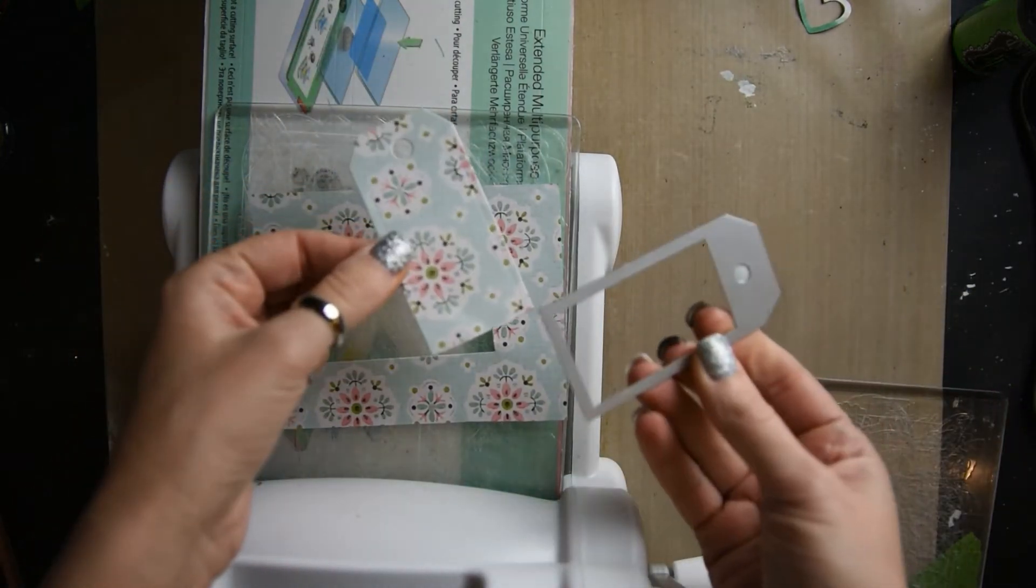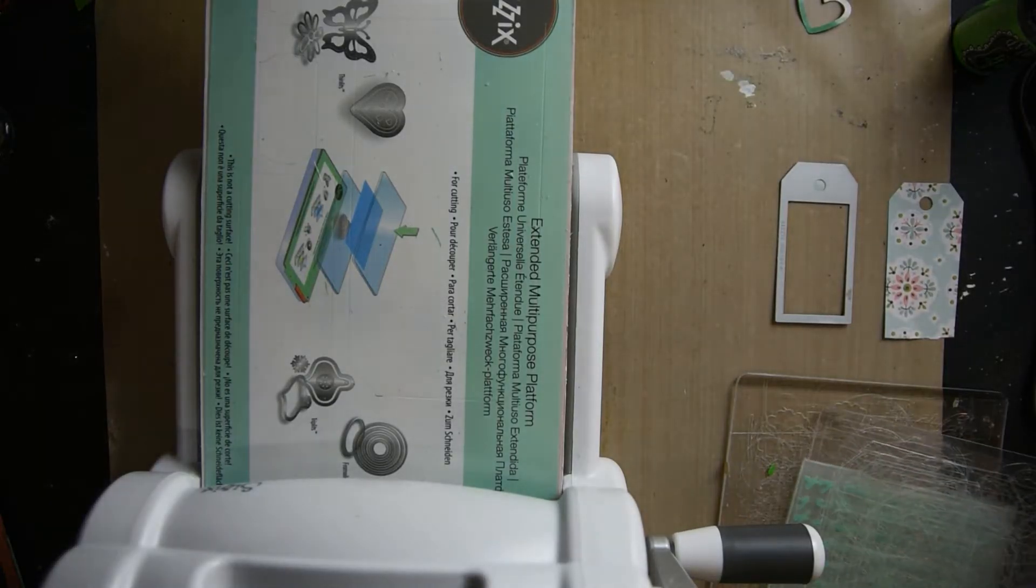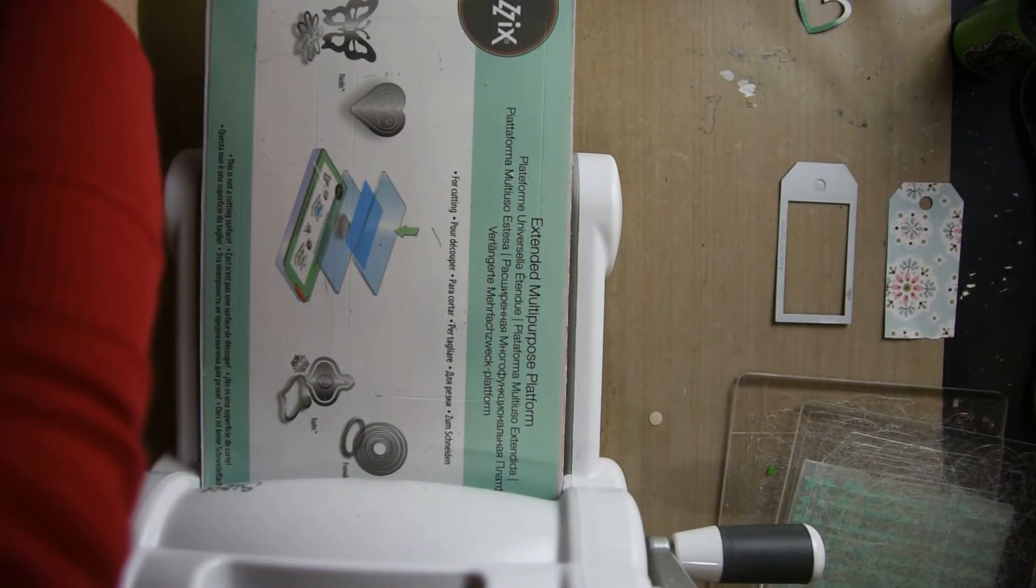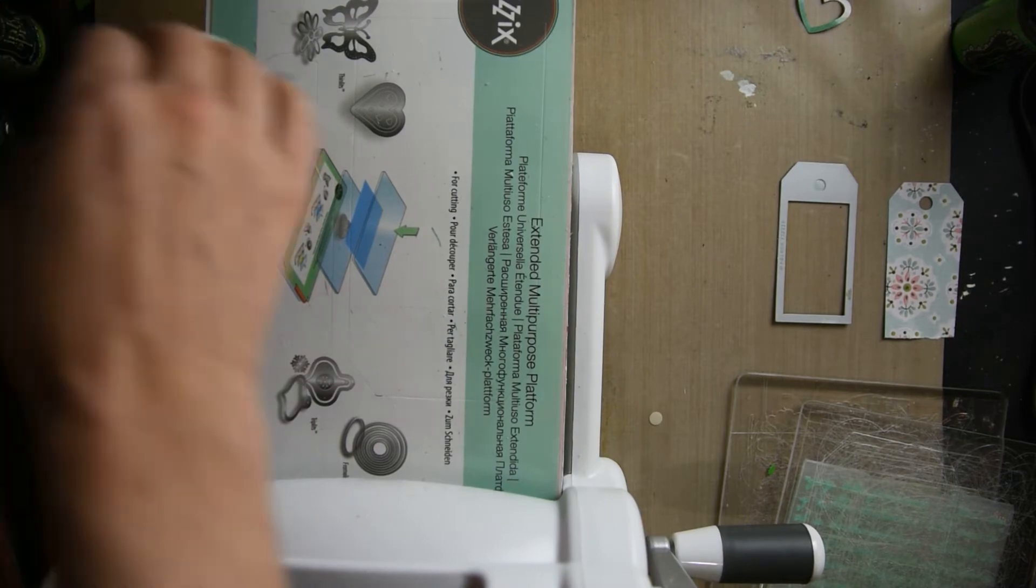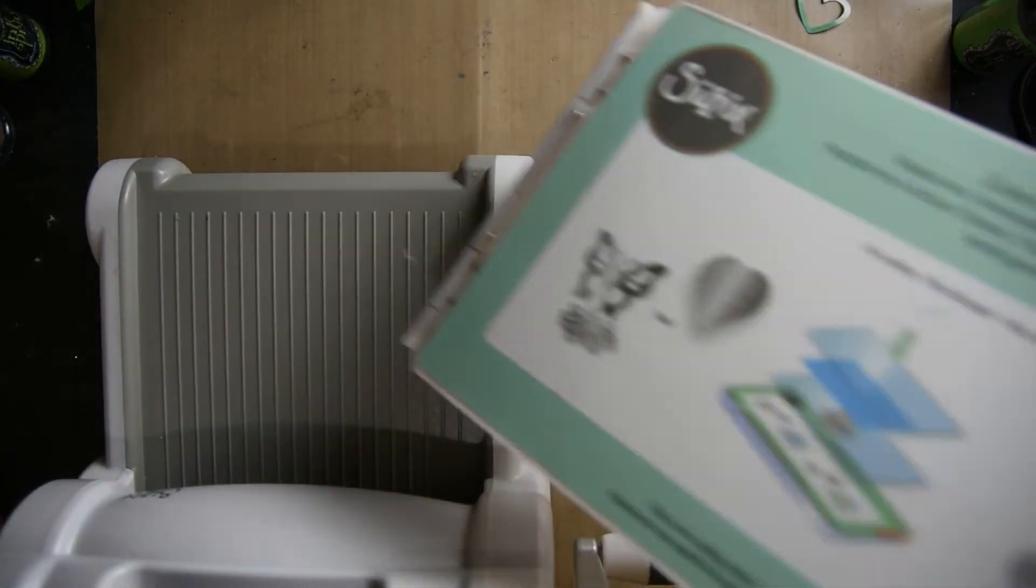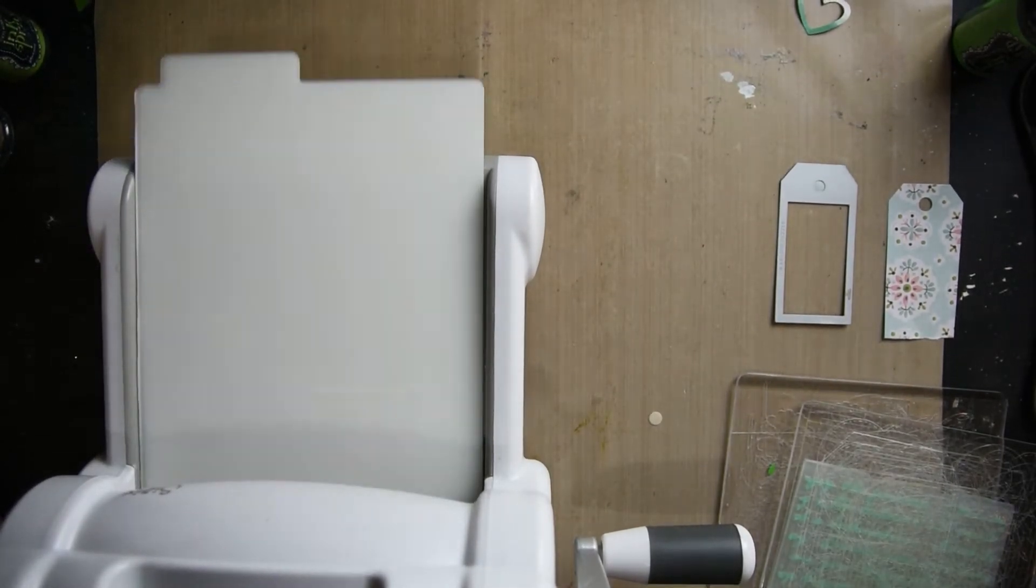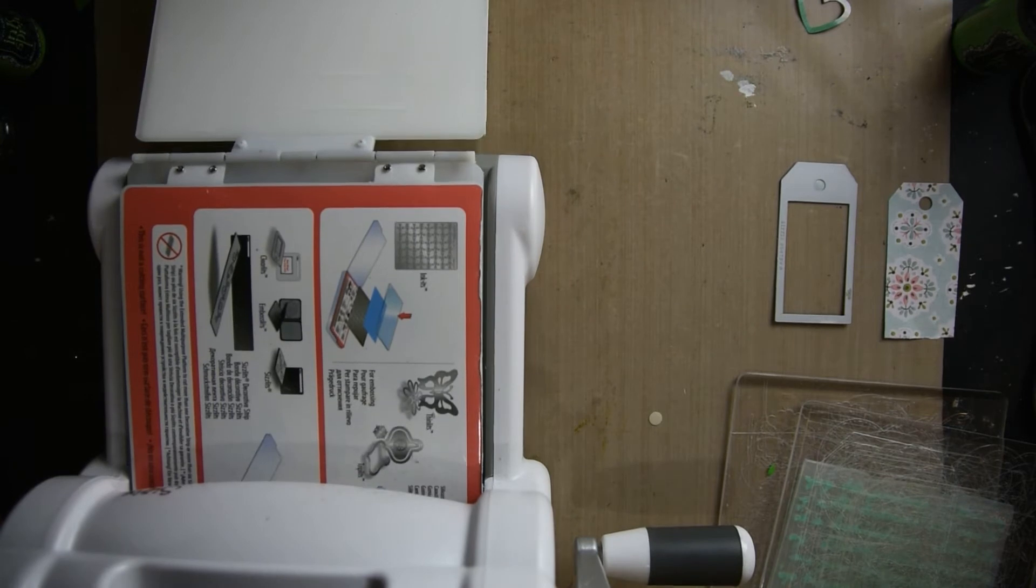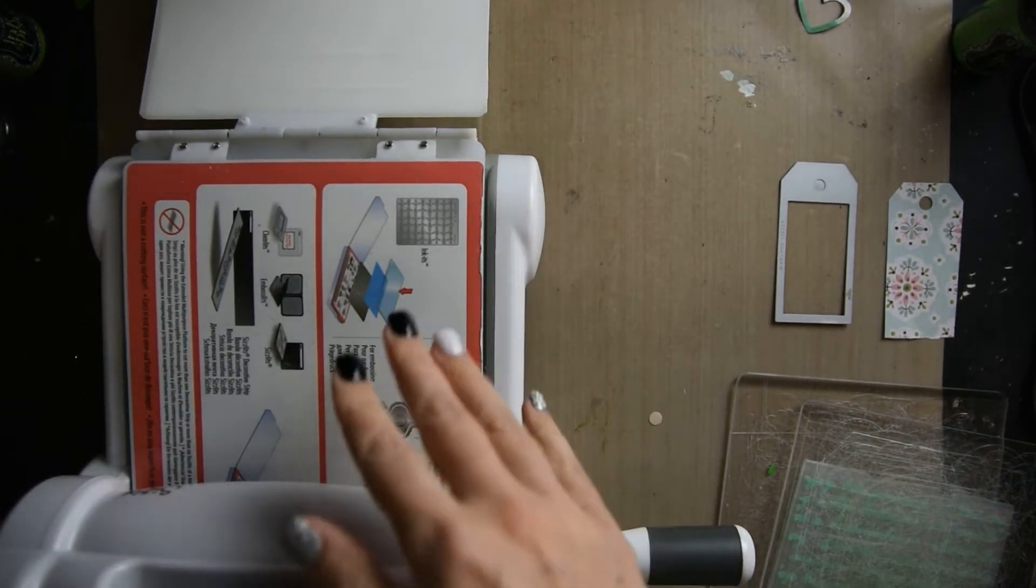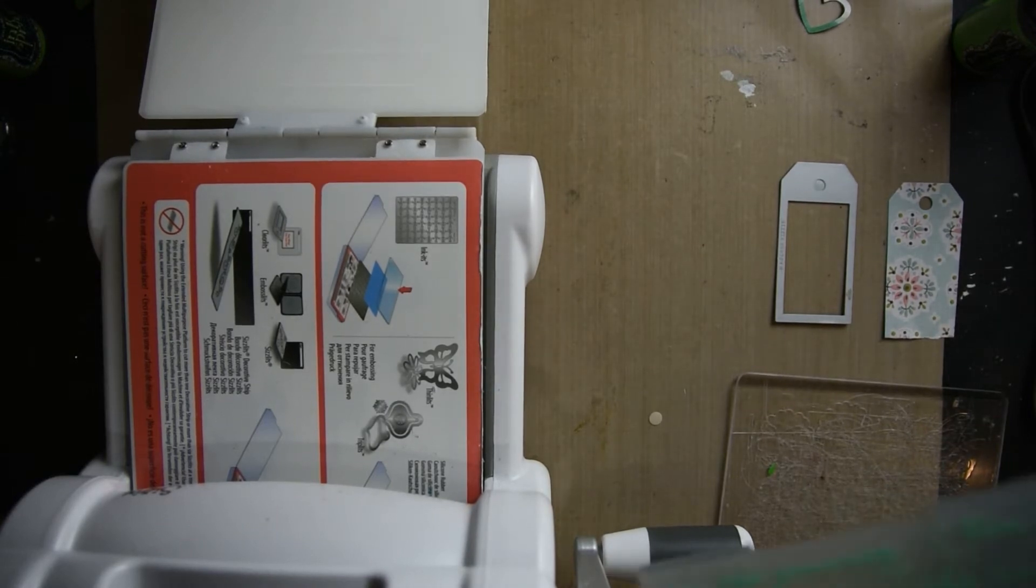So easy and so fun. If you make a lot of tags, the tag one is a really good die cut to have. But they have so many—hearts, circles, squares, snowflakes—just anything you can dream up, which really come in handy for making cards and things in your art journal.